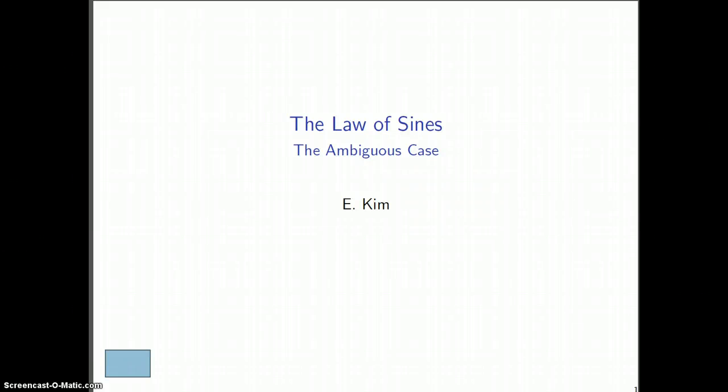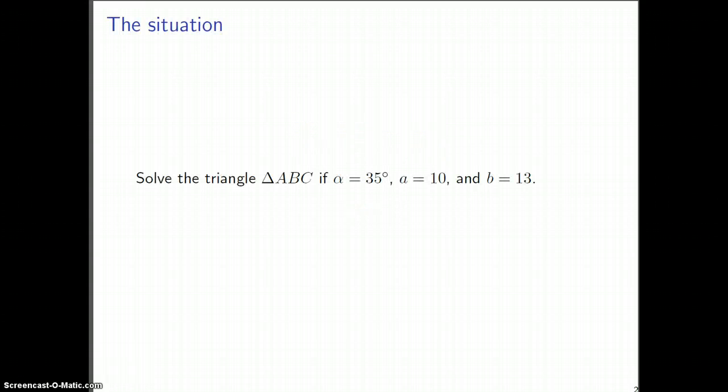In this video, we're going to look at the ambiguous case, which is a situation that arises when you try to use the law of sines. The question we're going to look at is solve the triangle ABC, and the given data is one angle, alpha equals 35 degrees, and two side lengths, a equals 10 and b equals 13.